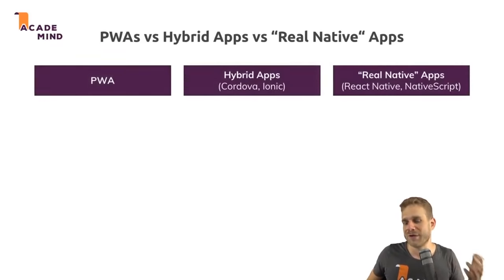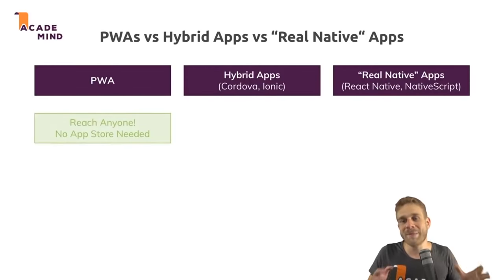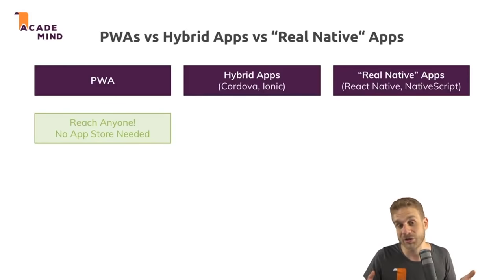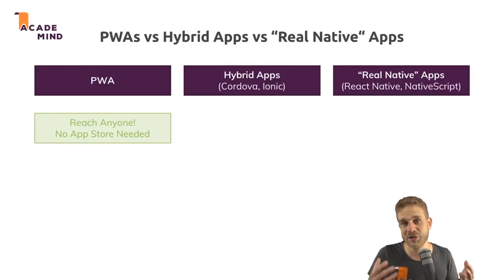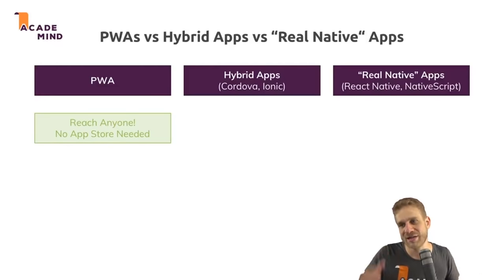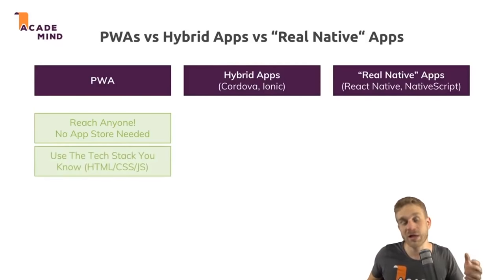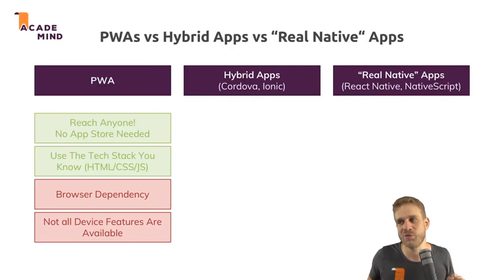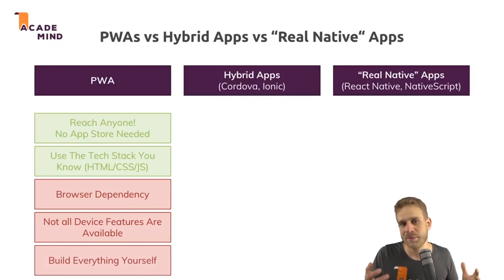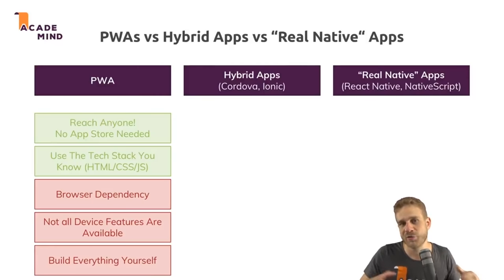Building progressive web apps is a lot of fun and a great alternative if you can afford having a fallback. Ionic 4 will embrace the idea of progressive web apps, allowing you to write code for Ionic projects that you can either wrap into native apps or run as a progressive web app — really using one code base for all three platforms: the web, Android and iOS. Progressive web apps can be created without Ionic too, and it's generally a nice option or alternative.